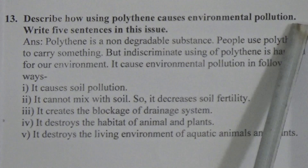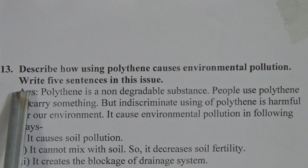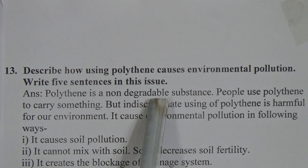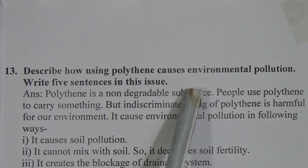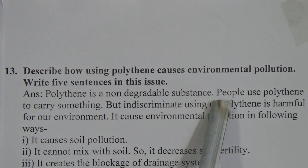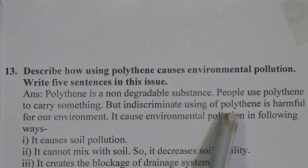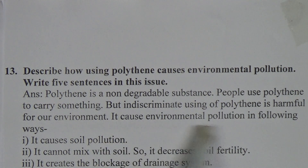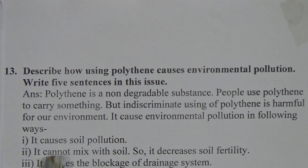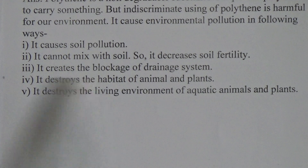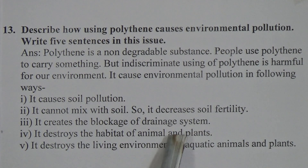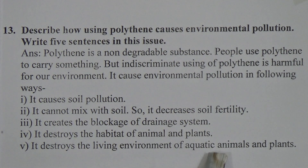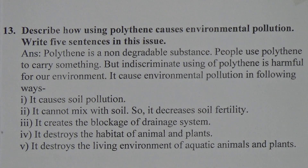Question 13: Describe how using polythene causes environmental pollution. Write five sentences on this issue. The answer: polythene is a non-degradable substance — polythene needs 450 years to mix with soil, that's why it is important to lessen the use of polythene. People use polythene to carry things, but indiscriminate use of polythene is harmful for our environment. It causes environmental pollution in the following ways: first, it causes soil pollution; second, it cannot mix with soil so it decreases soil fertility; third, it creates blockage of the drainage system; fourth, it destroys the habitat of animals and plants; fifth, it destroys the living environment of aquatic animals and plants.